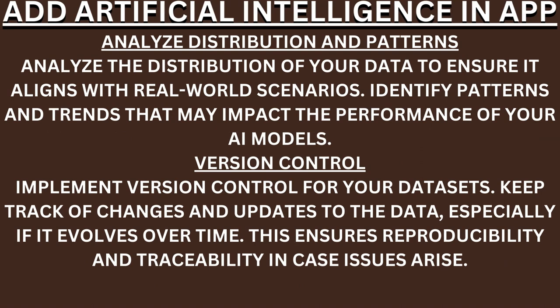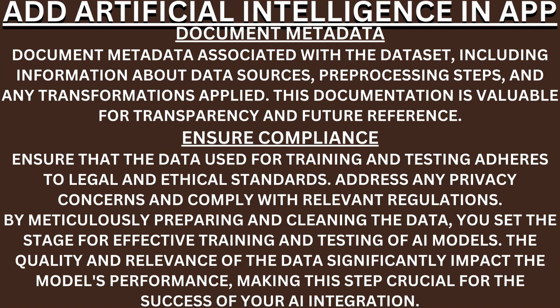Analyze distribution and patterns. Analyze the distribution of your data to ensure it aligns with real-world scenarios. Identify patterns and trends that may impact the performance of your AI models. Version control. Implement version control for your datasets — keep track of changes and updates to the data, especially if it evolves over time. This ensures reproducibility and traceability. Document metadata. Document metadata associated with datasets, including information about data sources, preprocessing steps, and any transformations applied. This documentation is valuable for transparency and future reference.